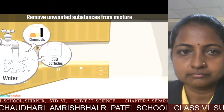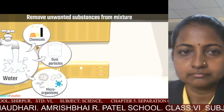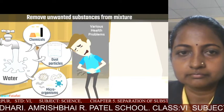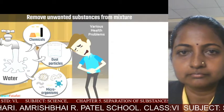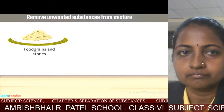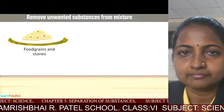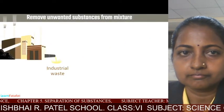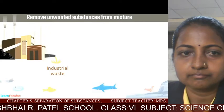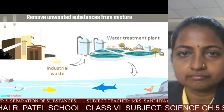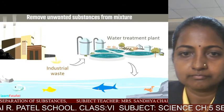Water contains impurities such as chemicals, dust particles, and microorganisms — drinking such water could cause health problems, so we use water purifiers containing various filters to separate these unwanted substances. Food grains often contain stones which are not useful, so we need to remove them before cooking. Industrial waste contains various impurities that may cause harm to organisms living in water, so impurities must be removed before mixing into water bodies.